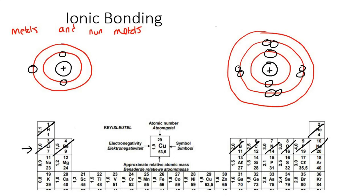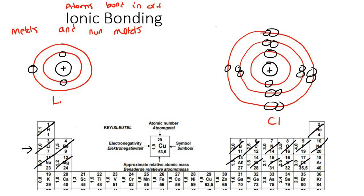In energy level number three, chlorine has seven electrons. In a previous lesson, we learned that the main reason atoms bond is in order to have complete outer energy levels.